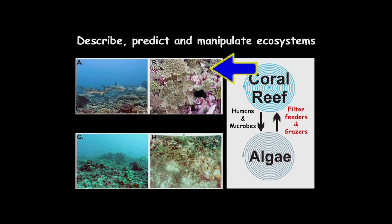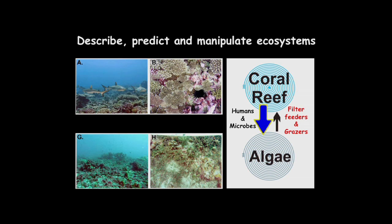Hopefully I've convinced you that we have a good handle on how we're going from a coral reef system to an algal-dominated system, mostly through the combination of humans and overfishing with the secondary effects of microbes. What we're trying to do now, working with collaborator Stuart Sandin at Scripps, is go back the other way: if we add back grazers and filter feeders, can we drive the microbes down and remove enough algae to get the corals to come back?